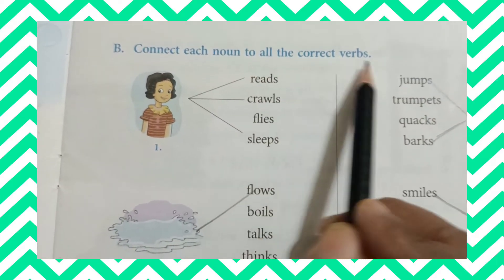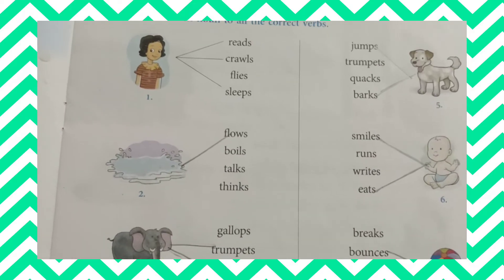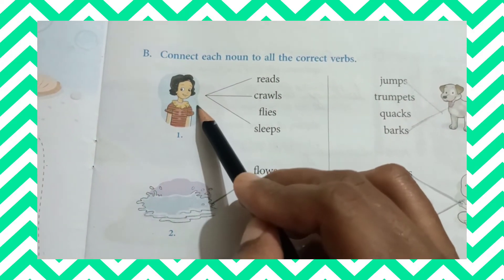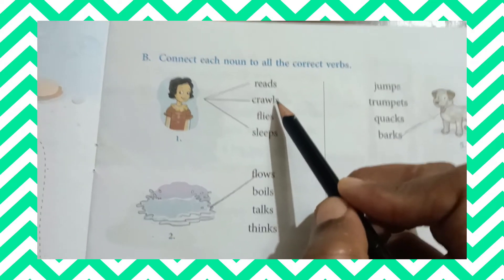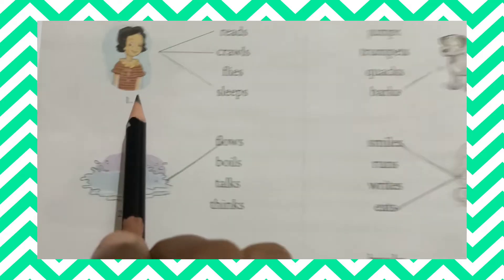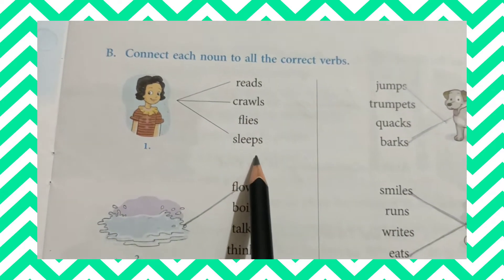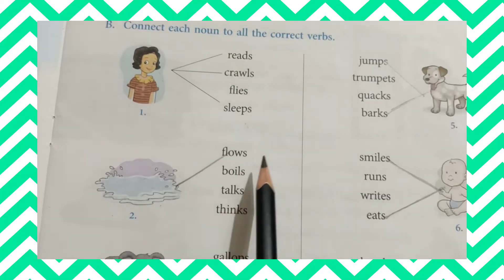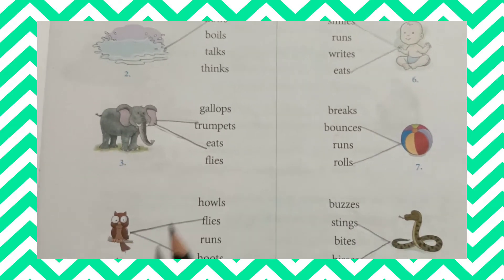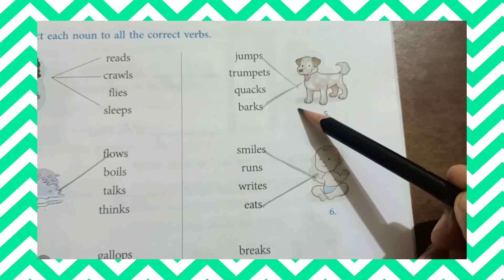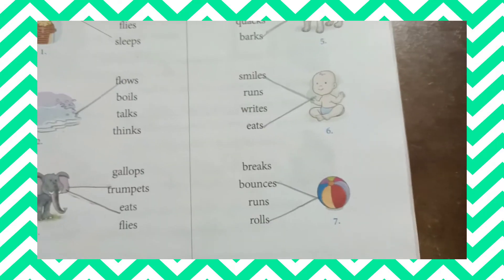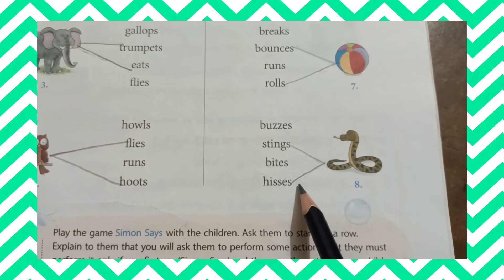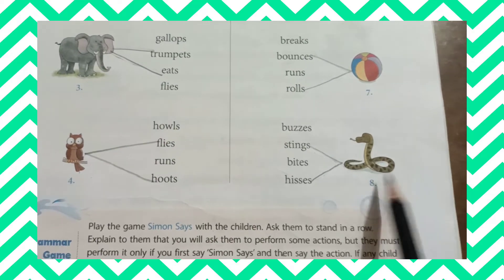We connect each noun to all the correct verbs. Here they have given some pictures — you can say nouns. For those nouns you have to connect them to the given verbs. Girl: reads, crawls, sleep. Water: flows. Elephant: trumpets, eats. Owl: flies, hoots. Dog: jumps, barks. Baby: smiles, eats. Ball: bounces, rolls. Snake: stings, hiss — the sound made by snake.